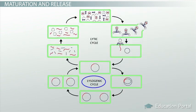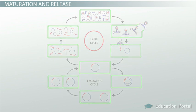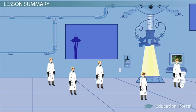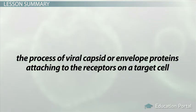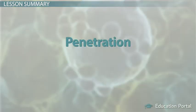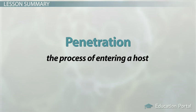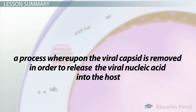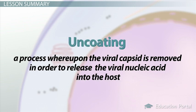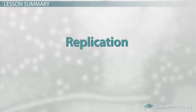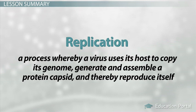Something to keep in mind is that some viruses will enter into the lysogenic phase prior to the lytic cycle, while others will skip to the lytic cycle right away. It's also time for our lesson review. Recall that the process of viral capsid or envelope proteins attaching to receptors on a target cell is termed attachment. Viruses then undergo penetration, the process of entering a host through one of several mechanisms. Upon penetration into the cell, a process whereupon the viral capsid is removed in order to release the viral nucleic acid into the host will occur — we call this action uncoating. After uncoating, replication must occur: this is when a virus uses its host to copy its genome, generate and assemble a protein capsid, and thereby reproduce itself.